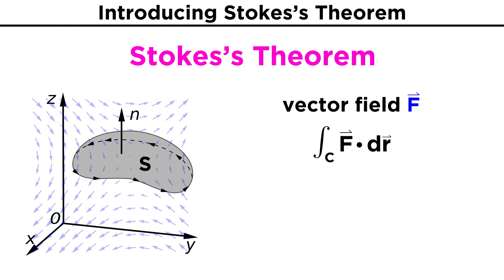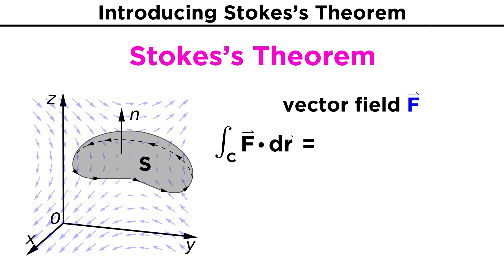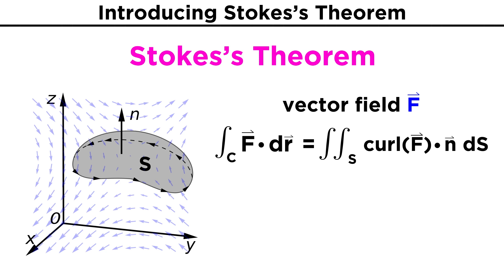Stokes' Theorem gives us another method of finding this line integral, which can lead to simpler calculations. The theorem states that the line integral of F along C is equal to the surface integral of the curl of F dot n over the surface S. We discussed how to calculate surface integrals in the previous tutorial, so we have seen that they aren't too difficult to solve — it's just that now we have the extra step of taking a curl.